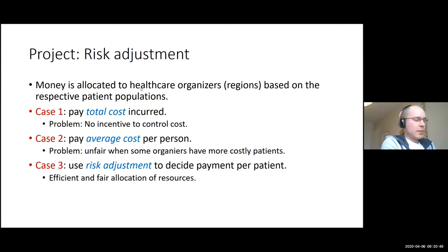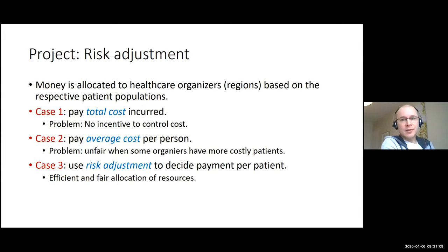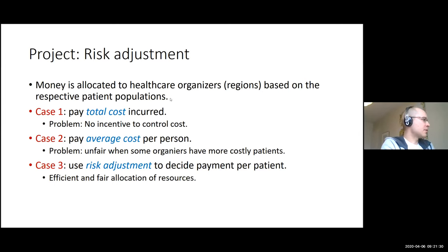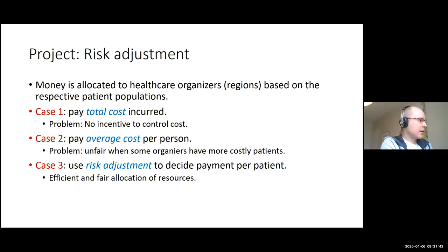I'll now discuss a project with THL that was in the news one or two years ago when Finland's social and healthcare reform was still alive. This is risk adjustment, where the goal is to learn a model to allocate funding in a fair and efficient fashion to healthcare providers. In risk adjustment, money is allocated to healthcare organizers based on their respective patient populations.